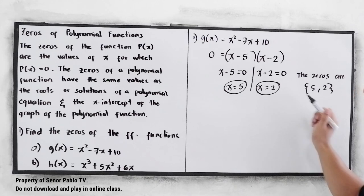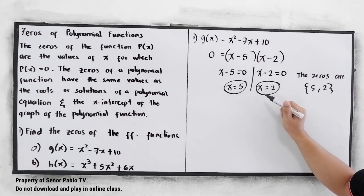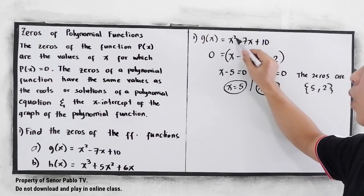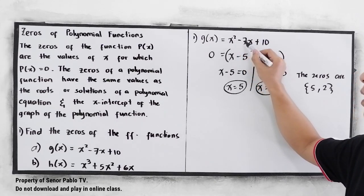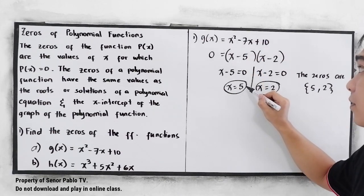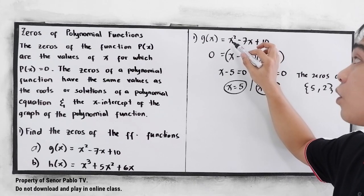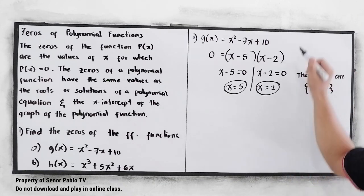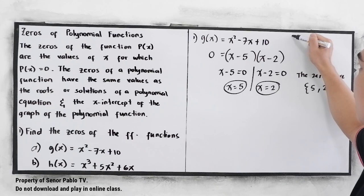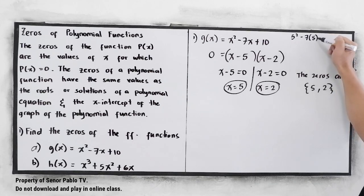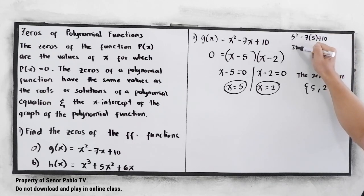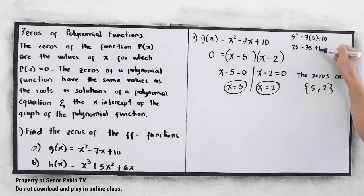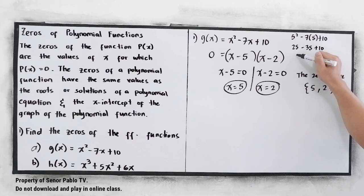If you want to check your answer, you can substitute the value of x. So if x equals 5: 5 squared is 25, minus 7 times 5 is negative 35, plus 10. So 25 minus 35 plus 10 gives us 25 minus 35 equals negative 10, plus 10, that will equal 0.